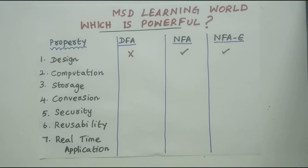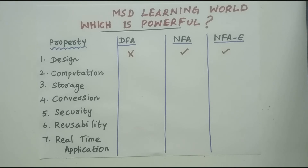Coming to property two — Computation — this is purely from the system's point of view, because the system is going to perform the computation of the machines. From the system's point of view, DFA is much faster because it has a very small number of states, all transitions are deterministic, and the machine does not face any ambiguous situations while making a transition for any input symbol.